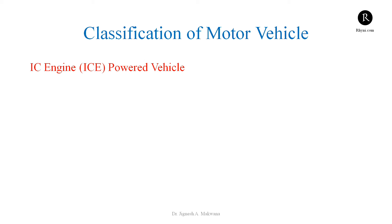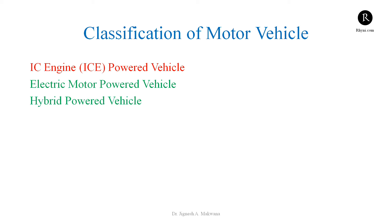Here we are interested in the classification based on power. A vehicle powered by an IC engine — internal combustion engine — is called an ICE or IC engine powered vehicle. If a vehicle is powered by an electric motor, it is called an electric vehicle. If it is powered by both an IC engine and an electric motor or some other combination, then it is called a hybrid power vehicle. In this course, we will see the engineering aspects of electric motor powered vehicles — electric vehicles — and we will also discuss hybrid electric vehicles.